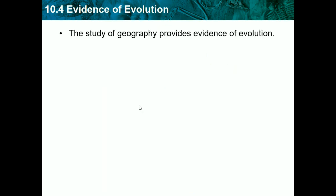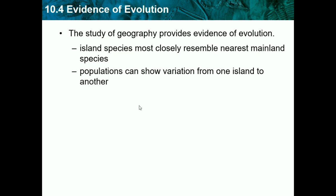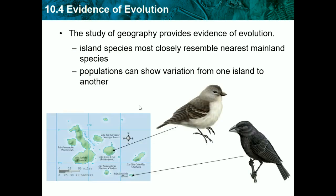The study of geography provides evidence of evolution. Island species most closely resemble the nearest mainland species, because they share the same climate and temperature and would have similar adaptations. Populations can show variations from one island to another — depending on what island it is and what trees are there, finches would have to adapt differently to the fruit or seeds they eat.